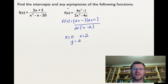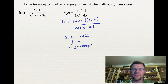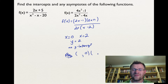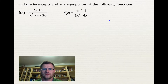To find the y-intercept I let x = 0, but I get 1 divided by 0, which is undefined — so there is no y-intercept. That makes sense because there's a vertical asymptote at x = 0. For the x-intercepts, I set the numerator equal to zero: (2x - 1)(2x + 1) = 0, giving x = 1/2 and x = -1/2. So our x-intercepts are at (1/2, 0) and (-1/2, 0).